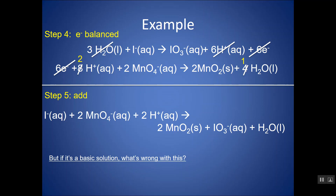Since this is actually a basic solution, the problem: a basic solution should have OH⁻ instead of H⁺. Water is still fine since it's aqueous. To convert, count how many H⁺ are in the reaction — there are two H⁺ on the left. Then add that many OH⁻ to each side of the reaction. Just like in math, whatever you do to one side you must do to the other, so we don't change the overall balancing.